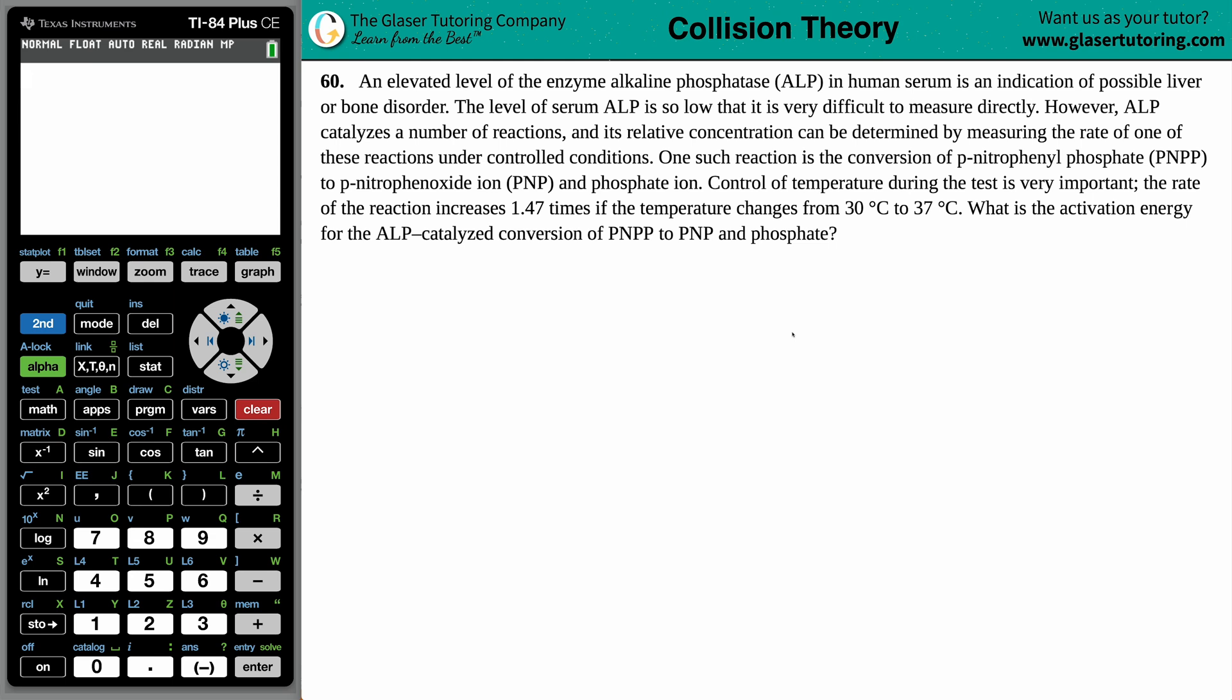Problem 60. An elevated level of the enzyme alkaline phosphatase, ALP, in human serum is an indication of possible liver or bone disorder.